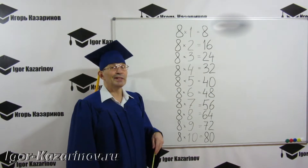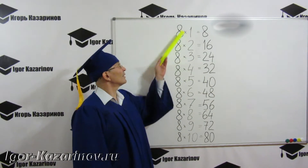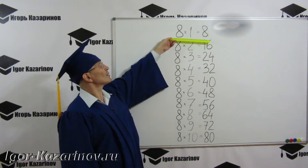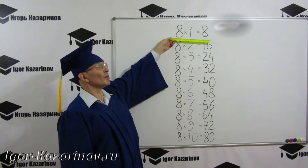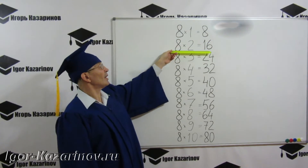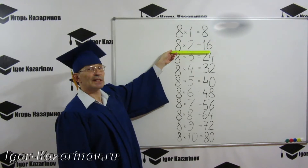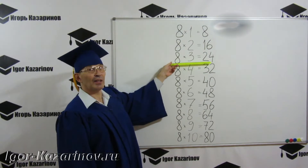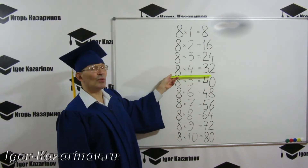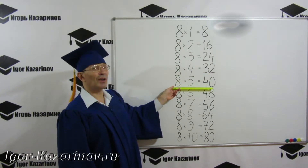First of all you need to know it in a row. So, 8×1=8, 8×2=16, 8×3=24, 8×4=32, 8×5=40.